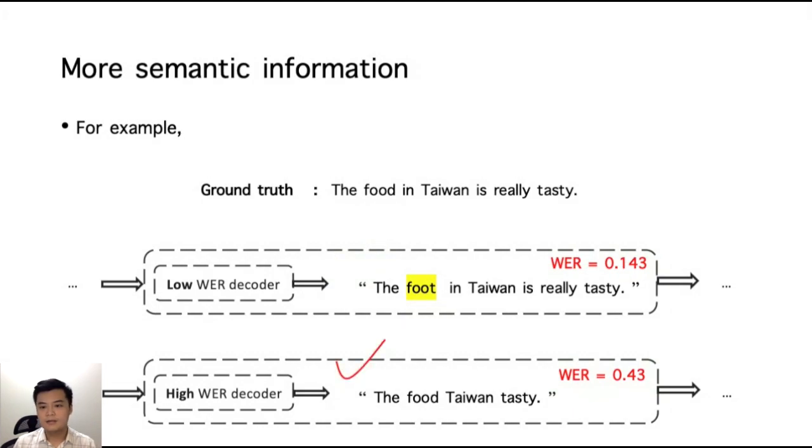The second is a high word error rate recognition result: The food, Taiwan, tasty. It is obvious that the high word error rate case is more semantically correct to the ground truth.